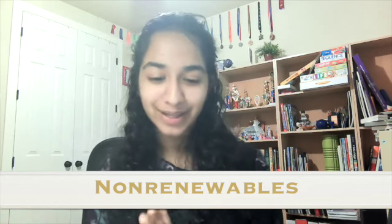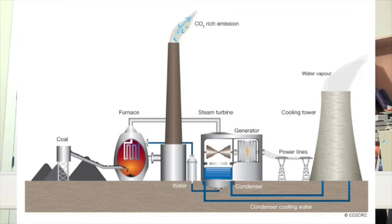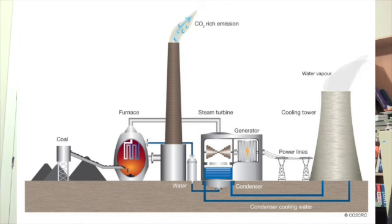Let's look at a coal power plant. First, coal is transferred into a furnace — sometimes known as a combustion tank — which heats it up and creates steam. That steam goes into the steam turbine, which moves the turbine, which then feeds the generator electricity. The generator creates electricity that is then moved off to power lines. The steam, or water vapor, is then moved through the condenser, where it condenses back to water.